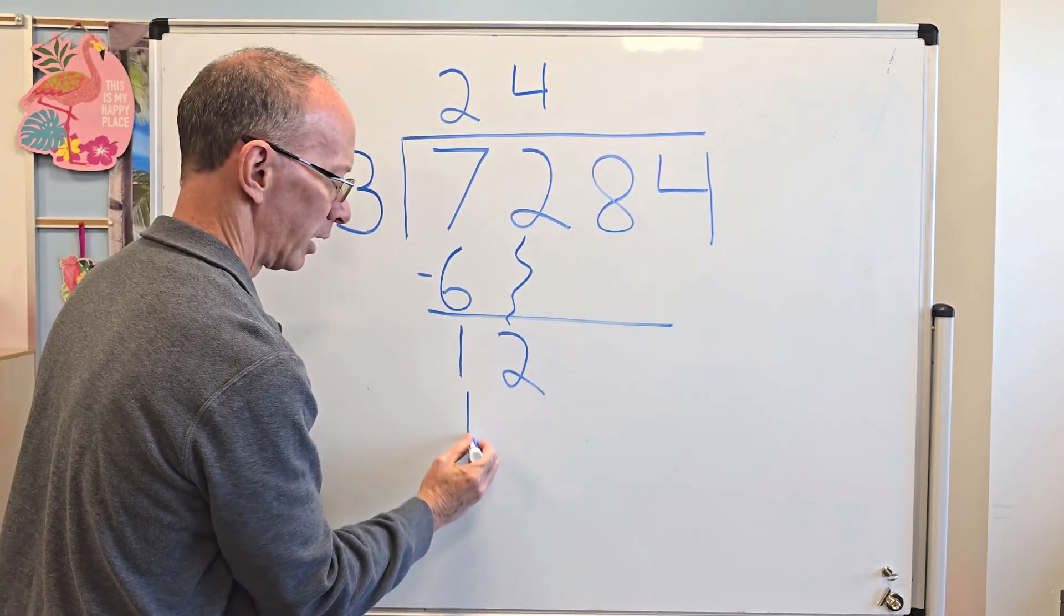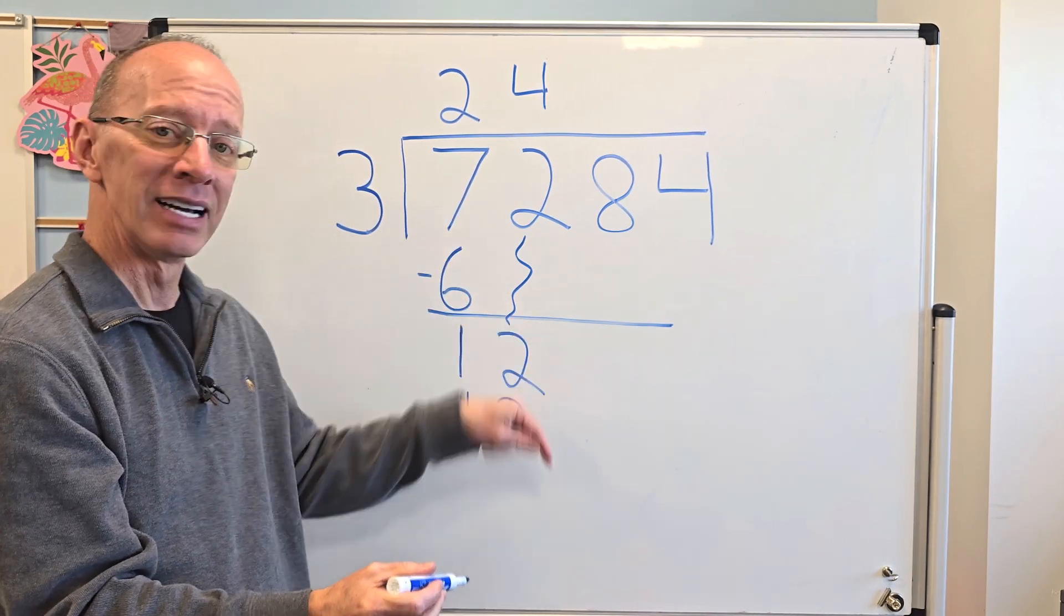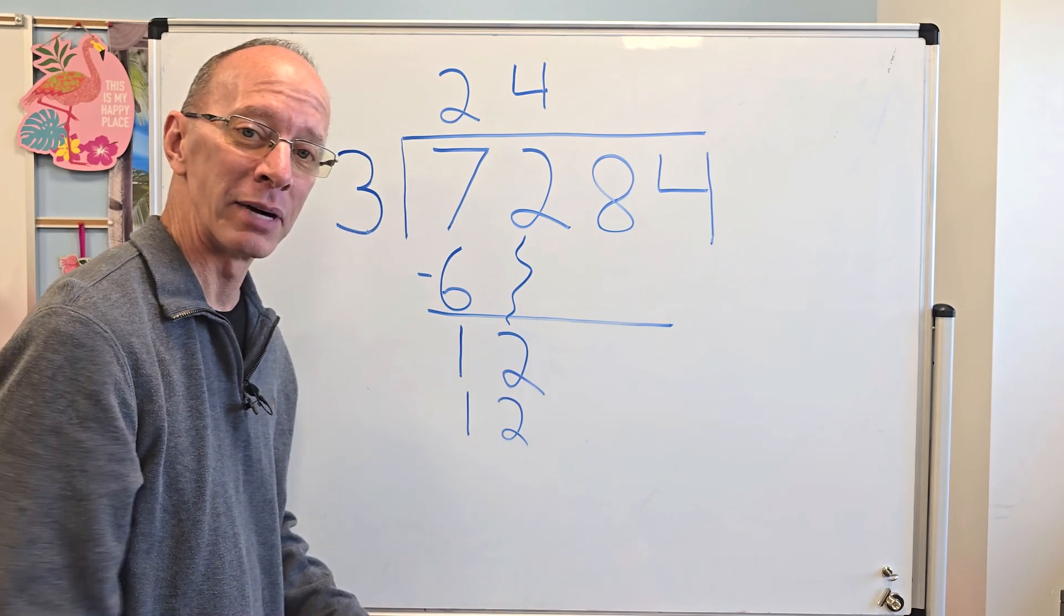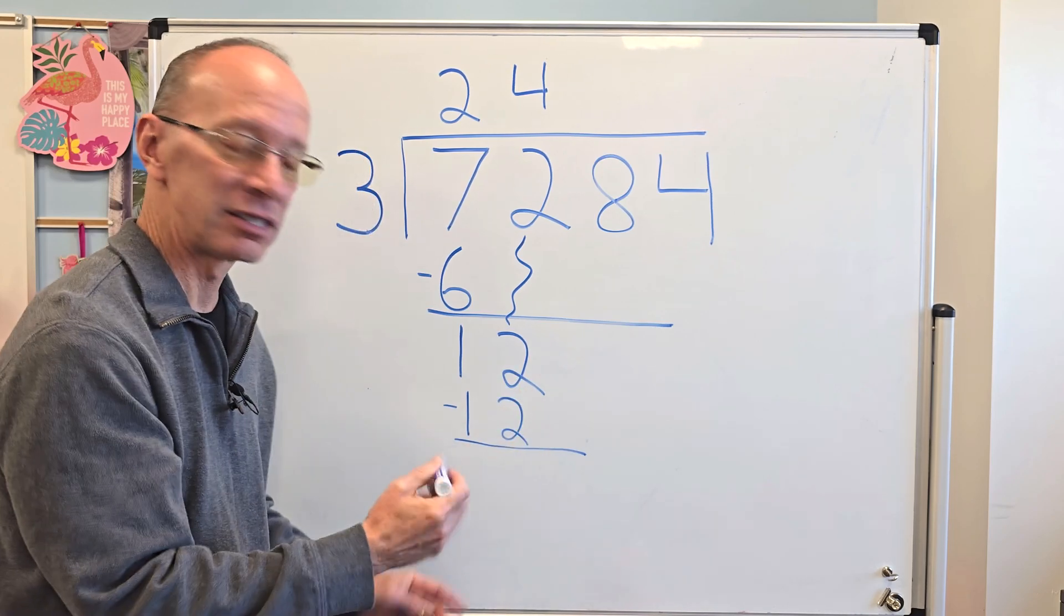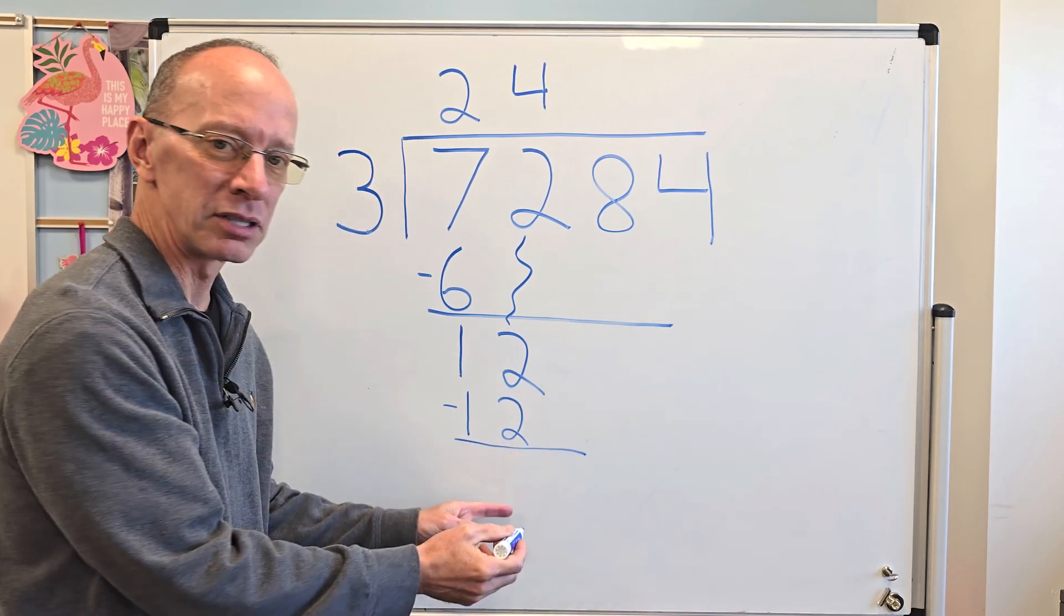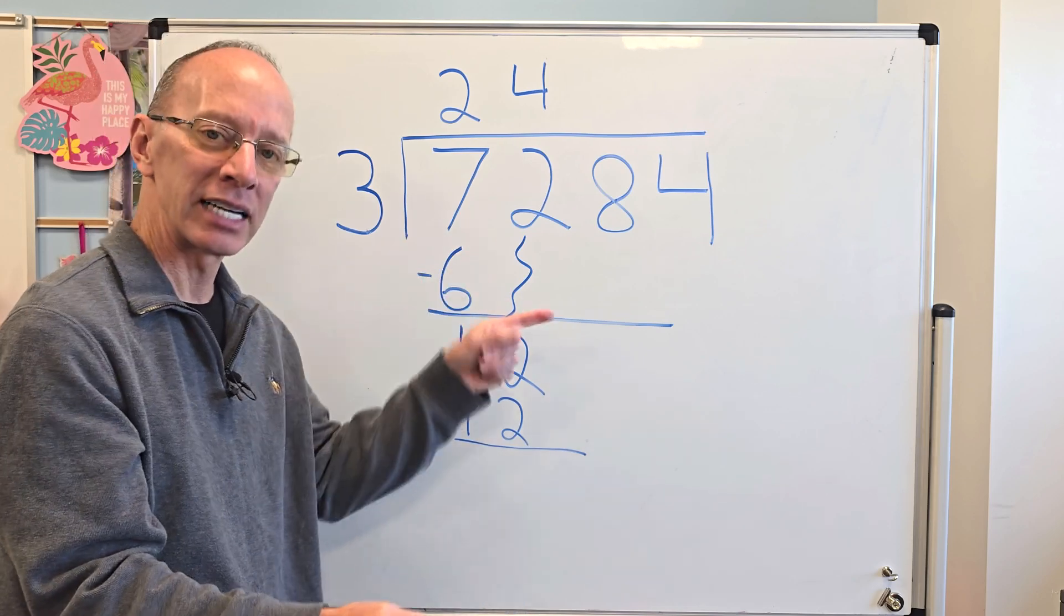4 times 3 is 12. I better start writing a little smaller. My numbers got big, and I only got this much more of my whiteboard left. So now it is 2 minus 2 is 0. You don't need to put 0 there. If you want to, you can, but you don't need to. And now I drop the next number down.